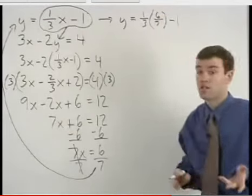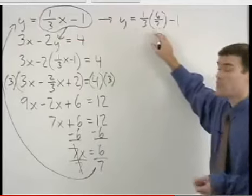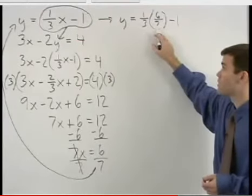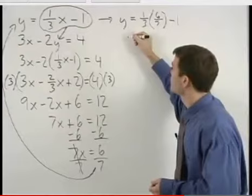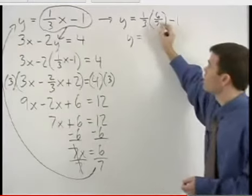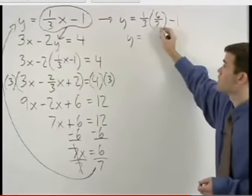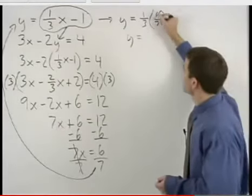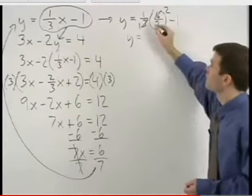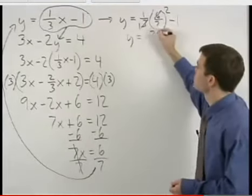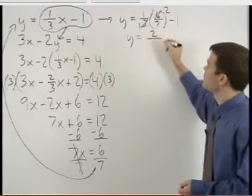To solve for y, we need to deal with some fractions. Simplifying the right side of this equation, we have 1/3 times 6/7. We can cross-cancel the 6 and the 3 to 2 and 1. We have 1 times 2, which is 2, and 1 times 7, which is 7.